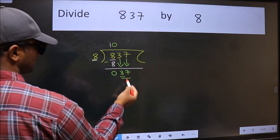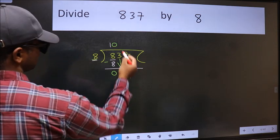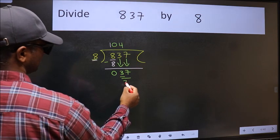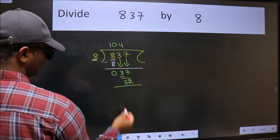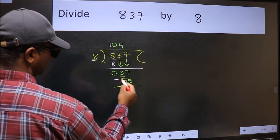Now 37. A number close to 37 in the 8 table is 8 fours, 32. Now we should subtract. We get 5.